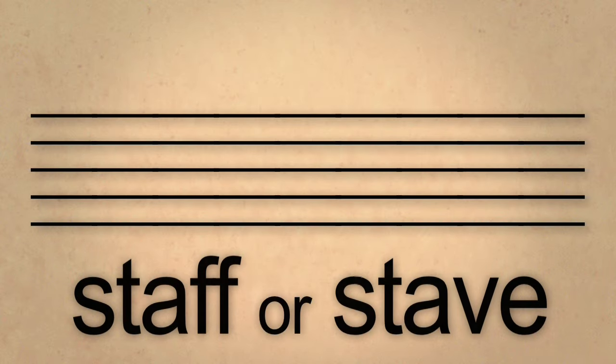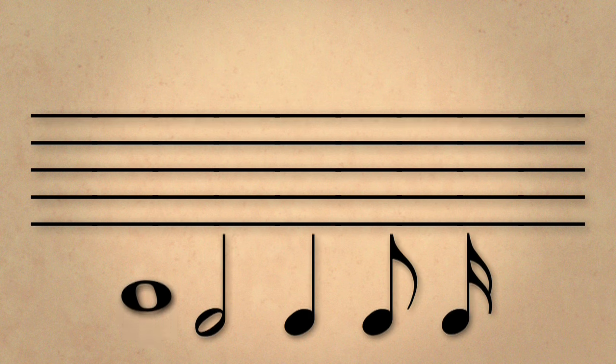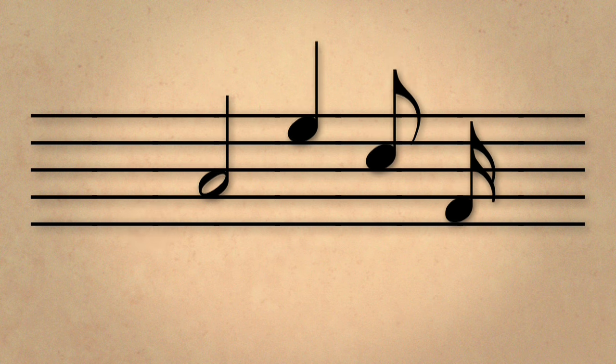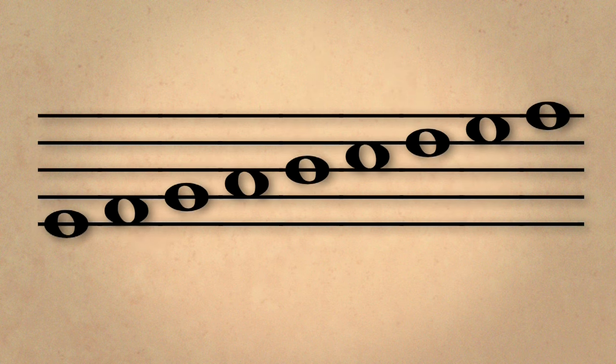We begin with a staff or a stave, which has five parallel lines. Any one of our notes can be placed on one of these five lines or four spaces. Let's work with a whole note.